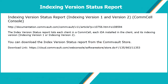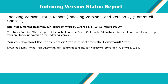As per Commvault documentation, the index version status report lists each client in a CommCell, each iDataAgent installed in the client, and its indexing version — that is, whether it is indexing version 1 or indexing version 2. You can download the index version status XML report from the Commvault store.